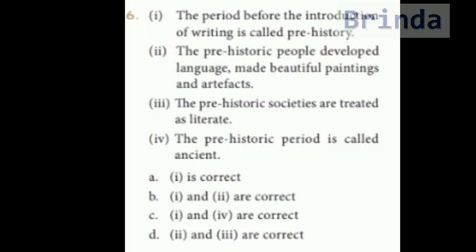Sixth question: Statement A — the period before the introduction of writing is called Prehistory. Statement B — the prehistoric people developed language, made beautiful paintings and artifacts. Statement C — the prehistoric societies are treated as literate. Statement D — the prehistoric period is called Ancient. Options: only first correct; first and second correct; first and fourth correct; second and third correct. The answer is B — first and second are correct.